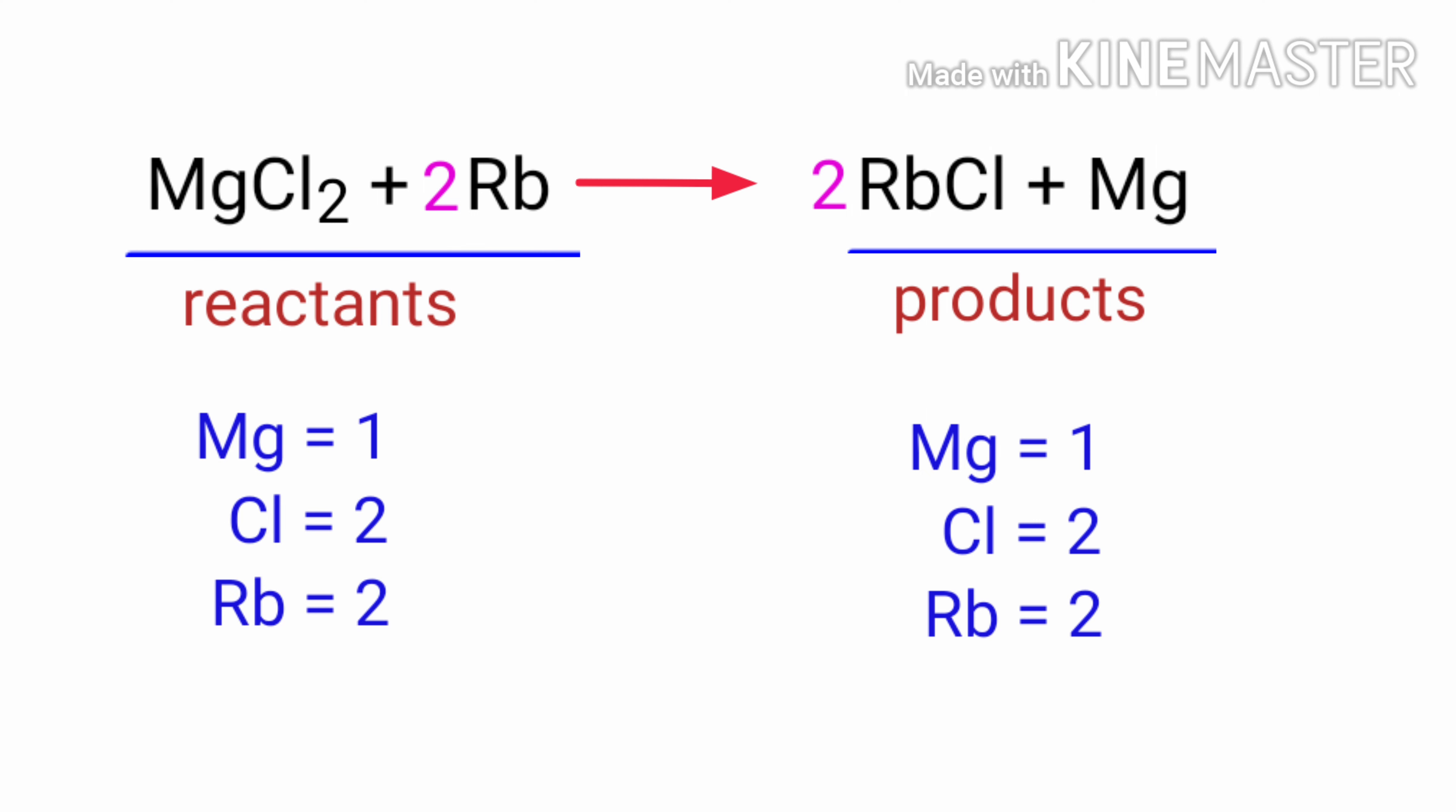The equation is now balanced. There are one Magnesium atom, two Chlorine atoms and two Rubidium atoms on both sides.